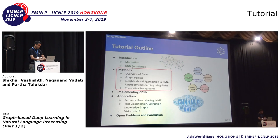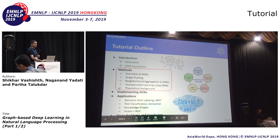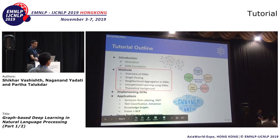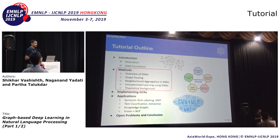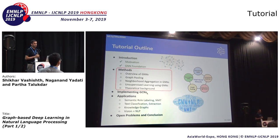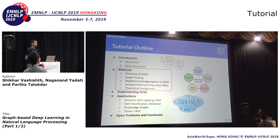That completes the initial introduction and motivation part. Next, Shikhar is going to walk us through a variety of methods for graph neural networks and how to implement them effectively. Then Naganan will present a variety of applications of these graph neural networks for both NLP and the NLP-vision intersection. Finally, we'll close off the tutorial with some open problems and conclusions, and we'll take a break after the implementing GCN part. Over to Shikhar.